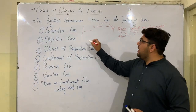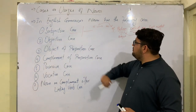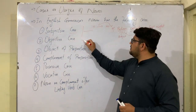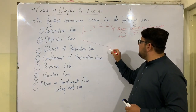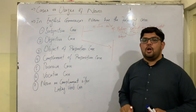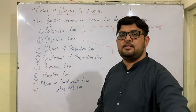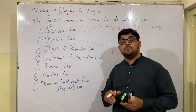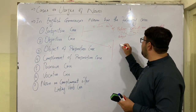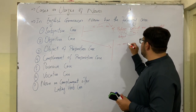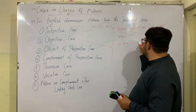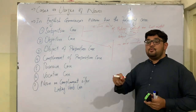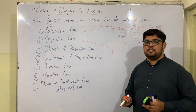The second case of noun is the objective case, also called the accusative case. In this case, a noun comes after the main verb in a sentence to function as the object of the sentence.